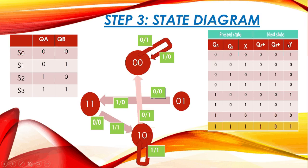For state S1(01): if input X=0, the next state is 11 (QA+=1, QB+=1), and for input X=1 in state 01 we again get next state 11. The output for the X=0 case has value 1, giving transition 0/1, and for X=1 the output is 0, giving 1/0.